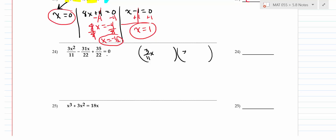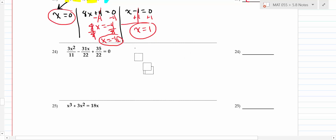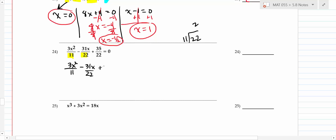From (2x - 7)(3x - 5) = 0: set 2x - 7 = 0 to get x = 7/2, and 3x - 5 = 0 to get x = 5/3. The key: if you have an equation with fractions, get rid of the fractions first. Don't do it any other way because it's too hard.